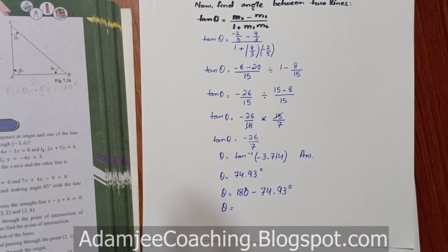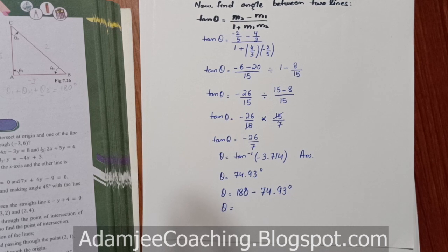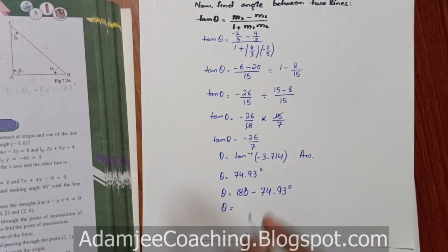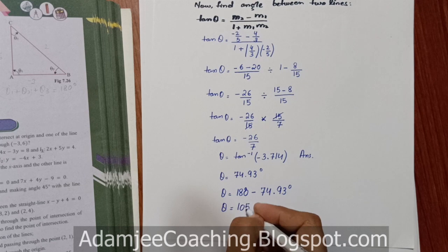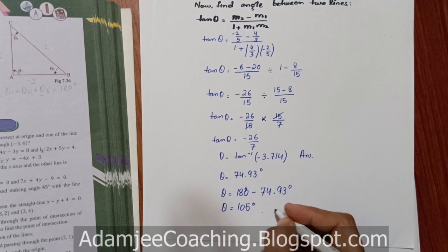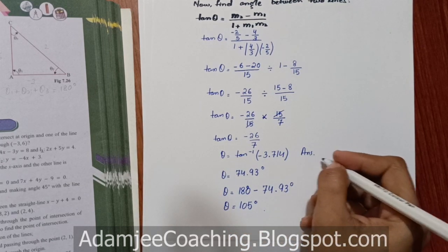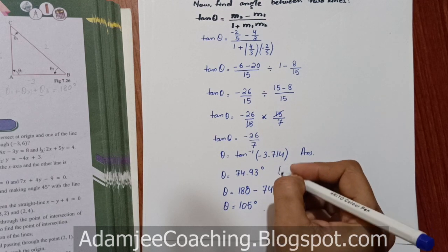Now 180 minus 74.93, yahan ki 105 degree. Theta kya hoga, obtuse hoga. Yahan par bhi aapke paas answer ho sakta hai.